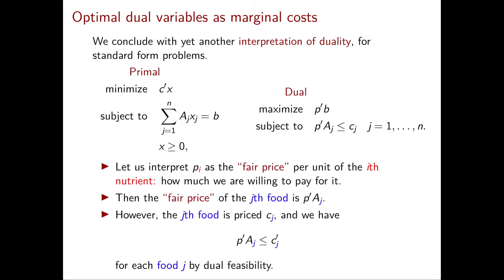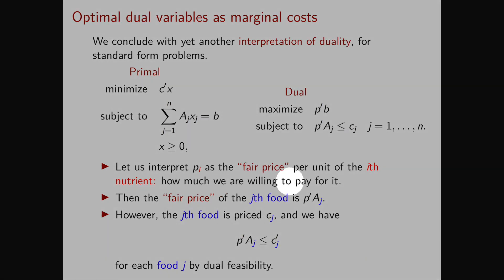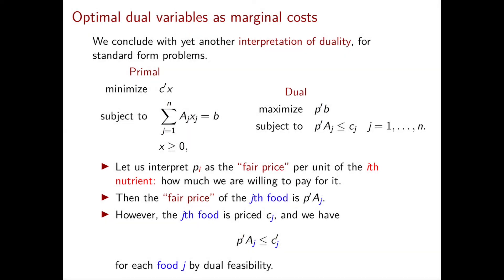We will see that the dual variable Pi can be interpreted as the fair price per unit of the i-th nutrient. So essentially, Pi represents how much we are willing to pay for one unit of the nutrient i.